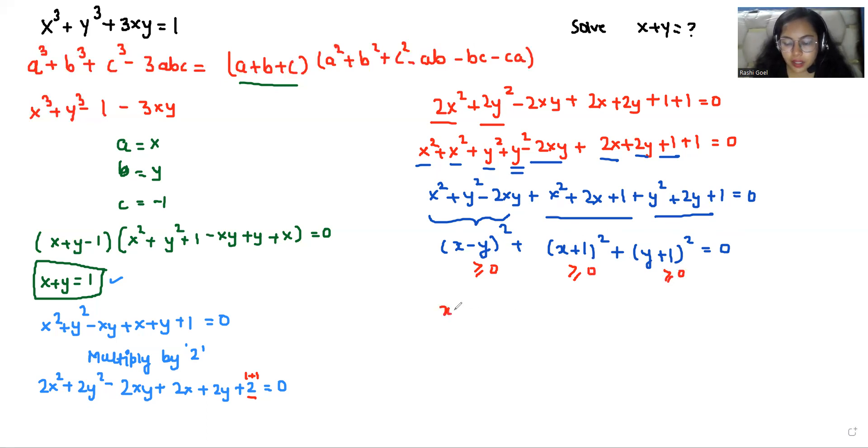For the sum to equal zero, each square must be zero. So x - y = 0, x + 1 = 0, and y + 1 = 0. This gives x = y = -1. Therefore, x + y = -1 + (-1) = -2. So we have two values of x + y: 1 and -2.